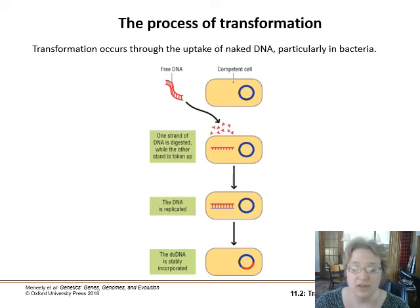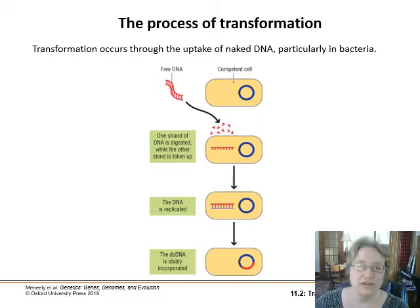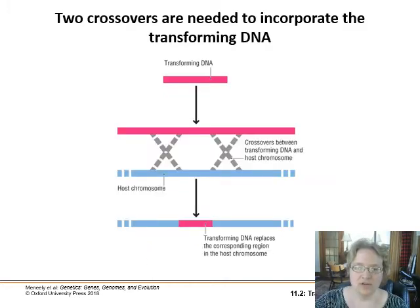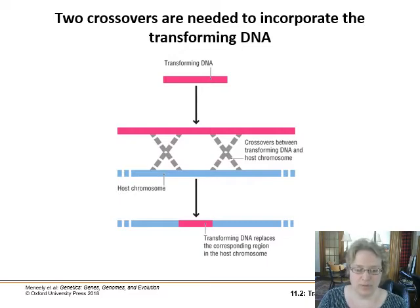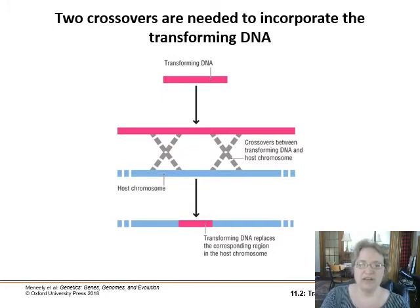Eukaryotic cells are not as good at transformation, but they could acquire DNA from a bacteria that has picked it up. With free DNA, generally one strand is taken up, replicated, and incorporated into the bacterial chromosome. If the new DNA is going to be incorporated into the bacterial chromosome of the recipient cell, there will be two crossovers forming between the host chromosome and the new DNA, and part of it gets inserted into the genome. If the DNA is in plasmid form, it exists separately from the bacterial chromosome as little loops of DNA in the cell.